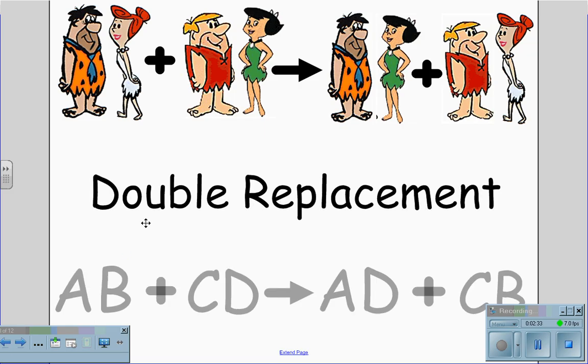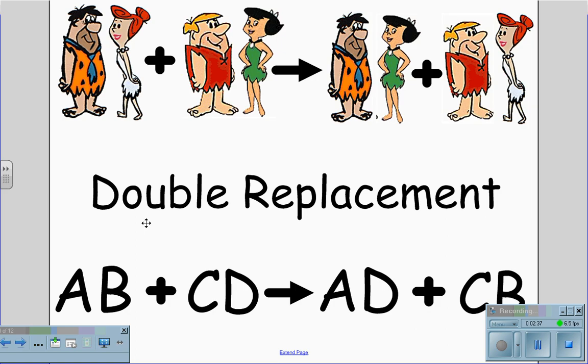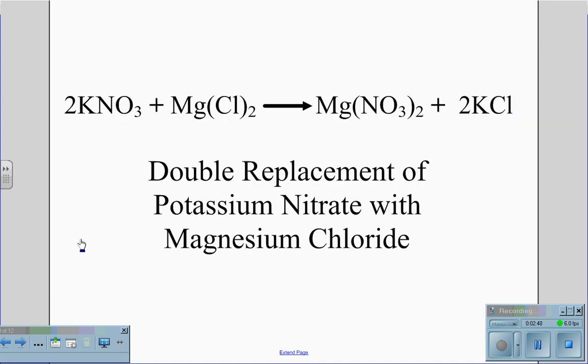AB compound breaks down along with CD compound which breaks down and you end up with compounds AD plus CB. An example of this would be a double replacement reaction where potassium nitrate combines with magnesium chloride and ends up being magnesium nitrate plus potassium chloride.